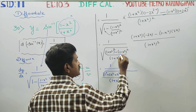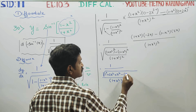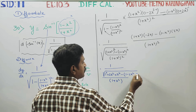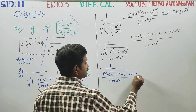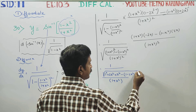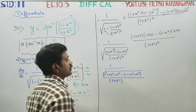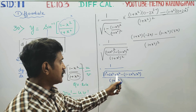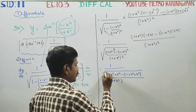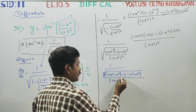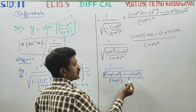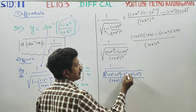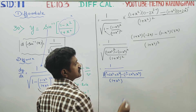Minus: what is (a minus b) whole square? It is a square minus 2ab plus b square. So we write a square minus 2ab plus b square.